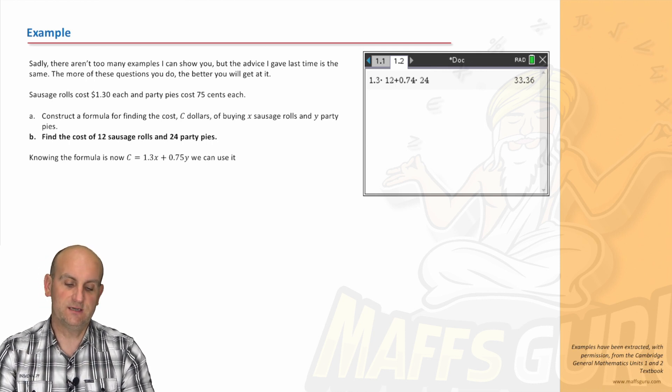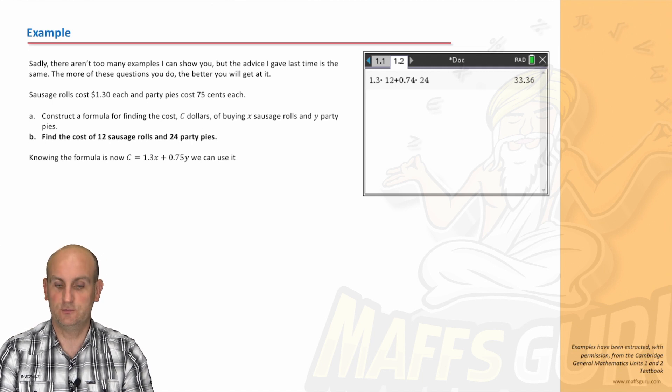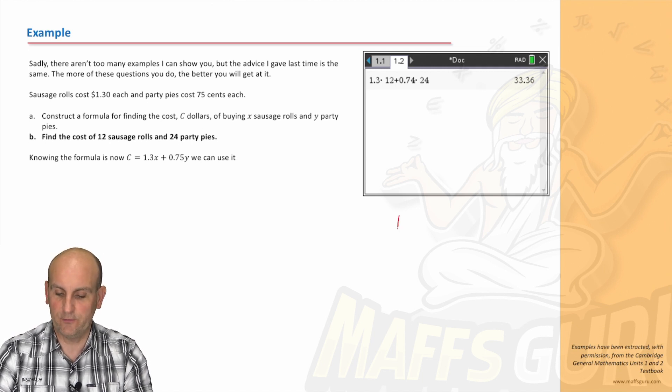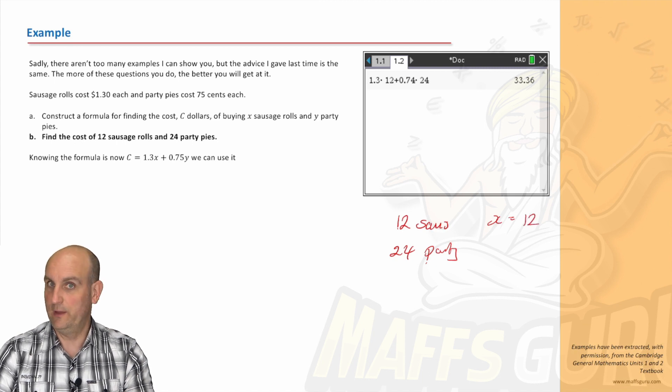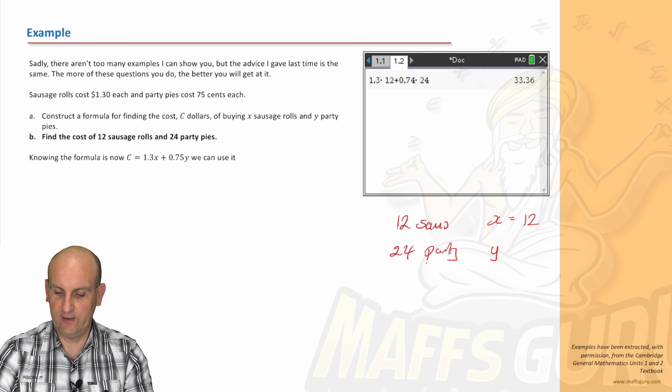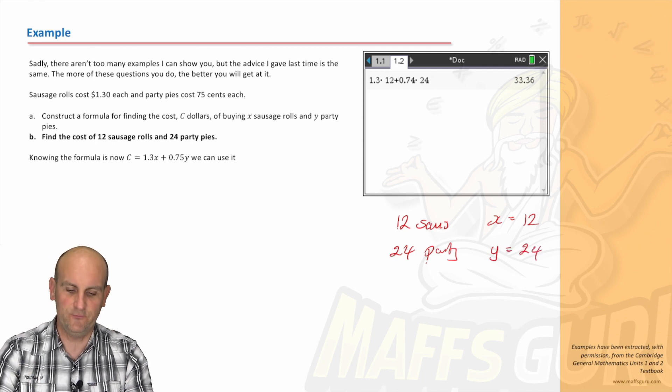Part B, last part of the question. Find the cost of 12 sausage rolls and 24 party pies. So I've now got 12 sausage rolls, and I've got 24 party pies. Well, hold on a moment. We let X be the number of sausage rolls. So they're now saying, in code, let X be 12. And we had 24 party pies. So they're now saying, let Y equal 24. Hold on a moment. I've got my values I can substitute into my formula.